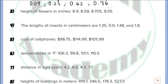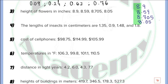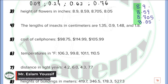In question number 3, we need to compare between 8.9, 8.59, 8.705, and 8.05. First, put all of the decimal points under each other, then write the numbers. You will find that all of the whole numbers are the same, so compare the number of digits at the right of the decimal: one digit, two digits, three digits, two digits. To compare, they must have the same number of digits, so complete the missing digits with zeros. Now we can compare.